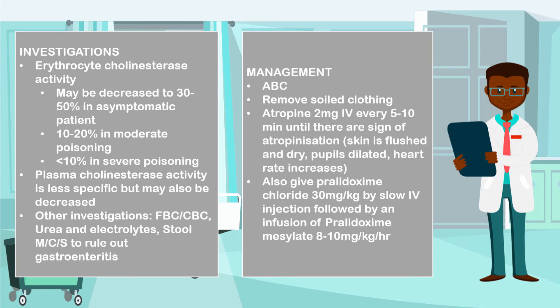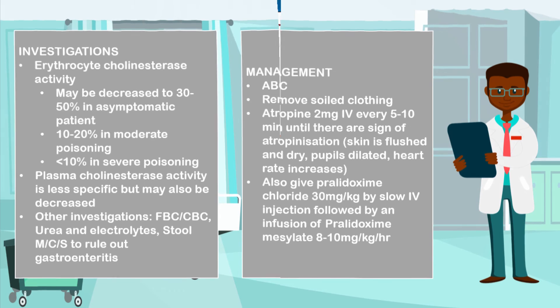The drugs you will give include atropine 2 mg IV every 5 to 10 minutes until there are signs of atropinization, where the skin becomes flushed and dry, the pupils begin to dilate, and the heart rate begins to increase. You may also give pralidoxime chloride 30 mg per kg by slow IV infusion, followed by pralidoxime mesylate 8 to 10 mg per kg per hour. And that is how we manage organophosphate poisoning.